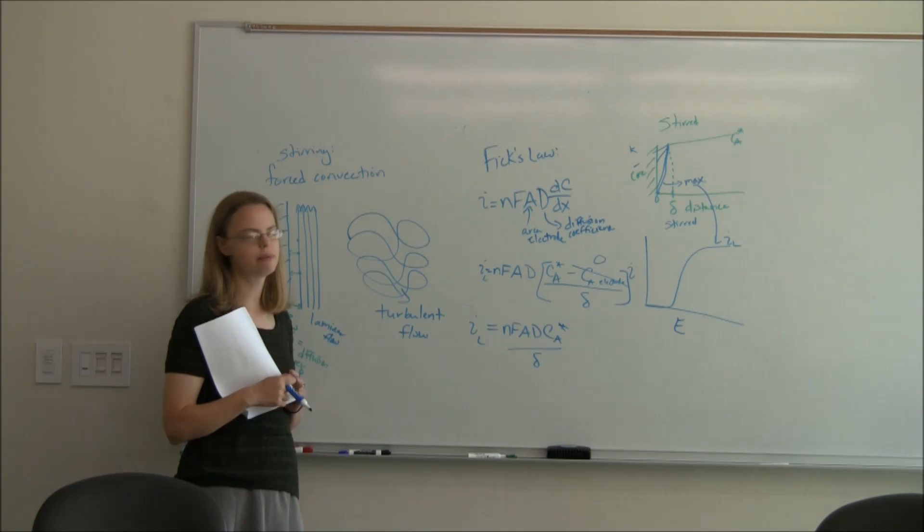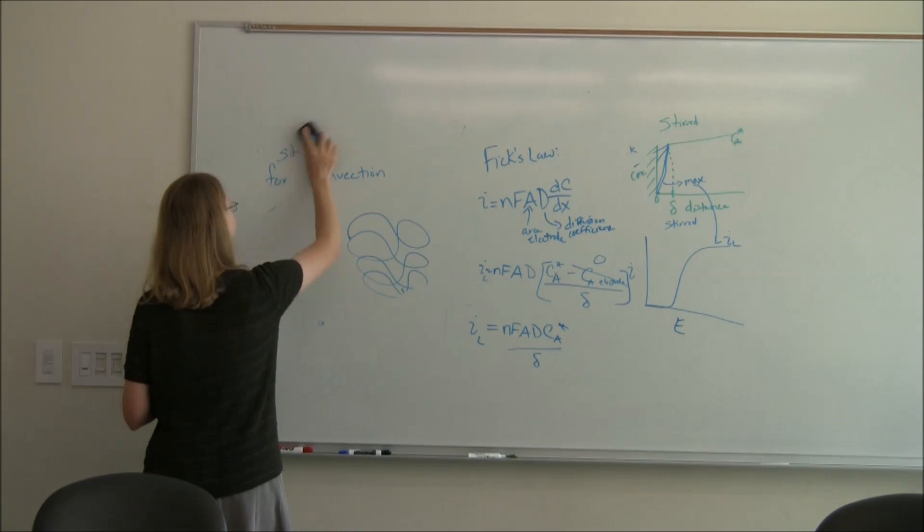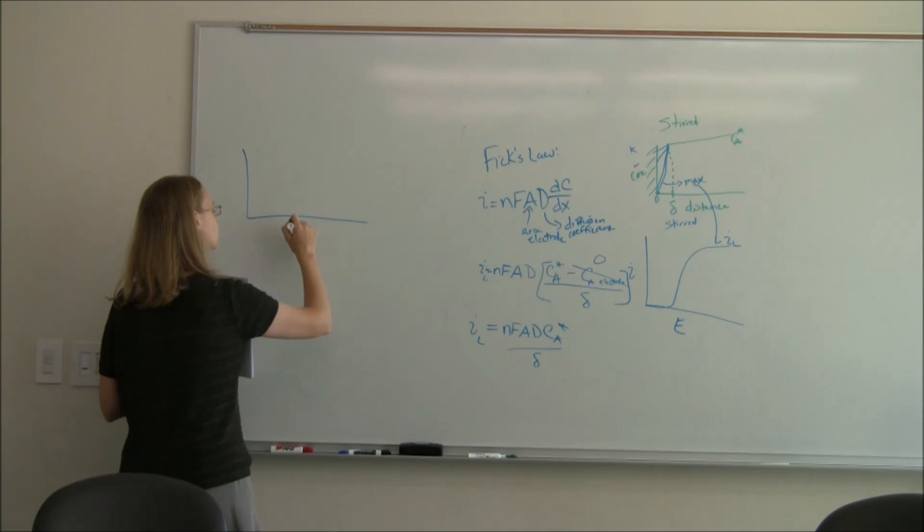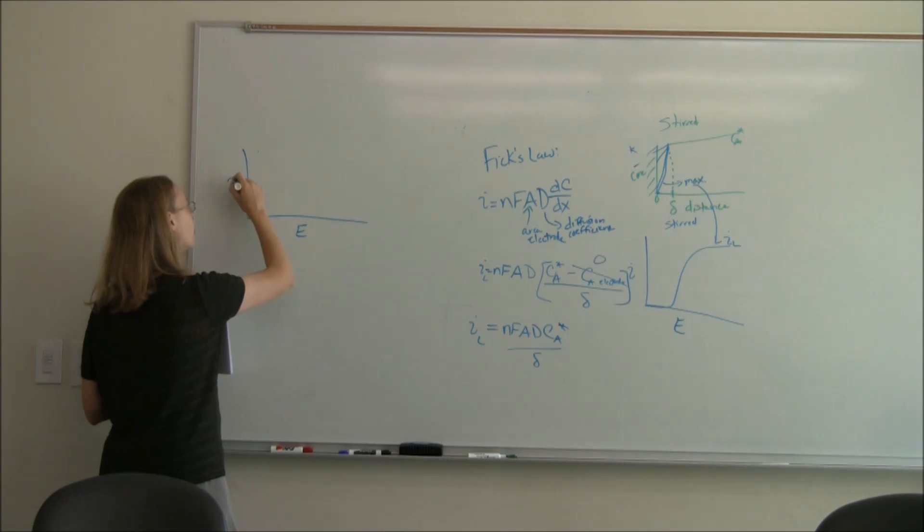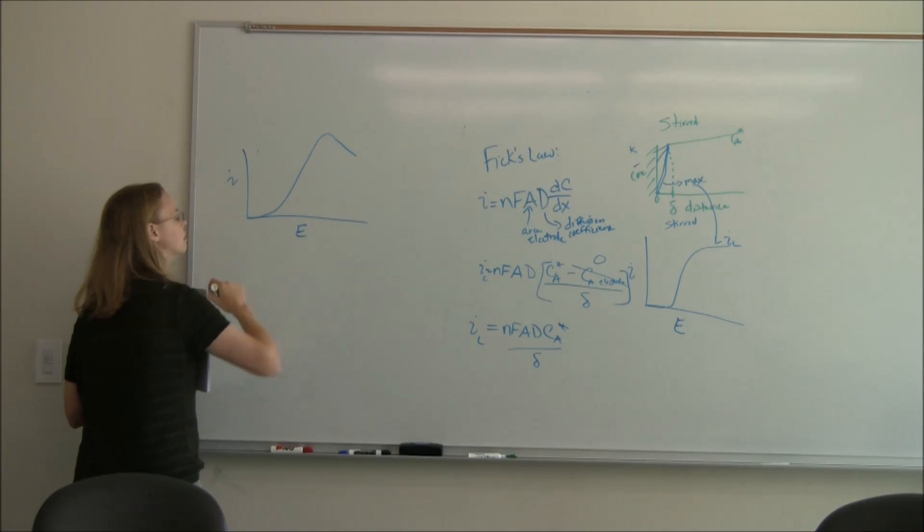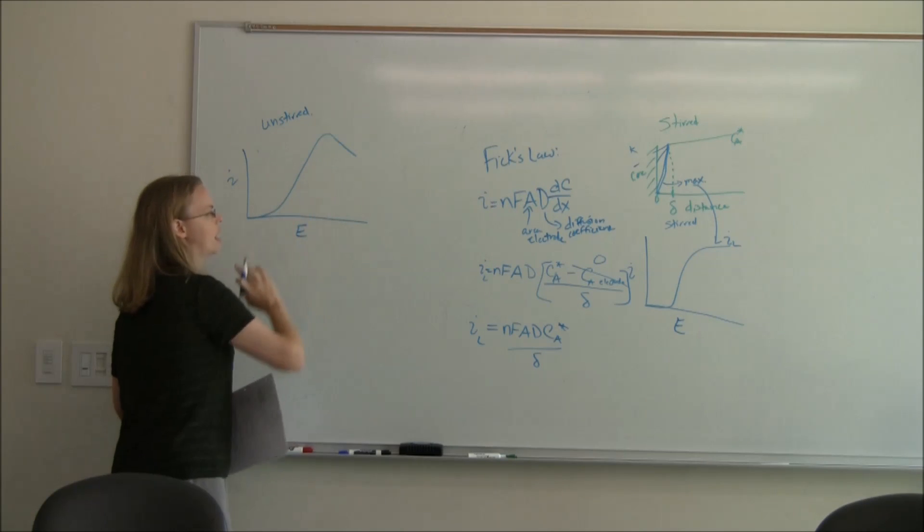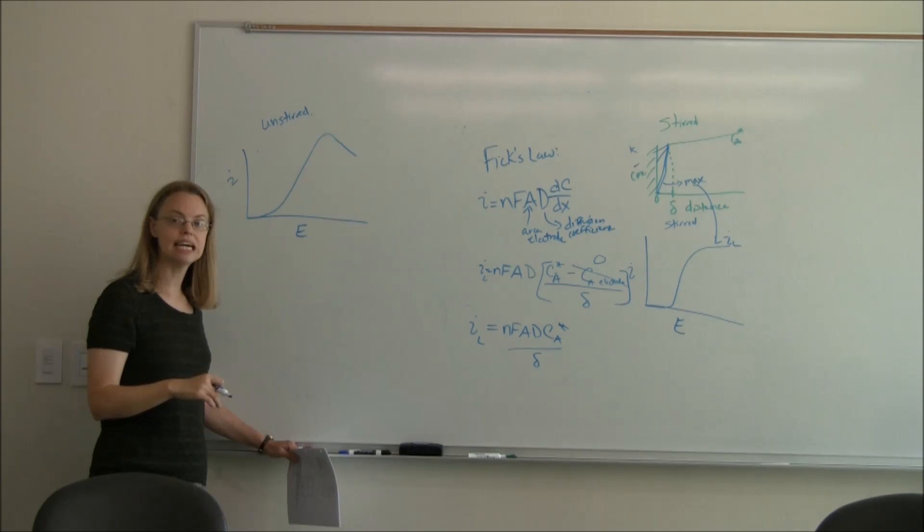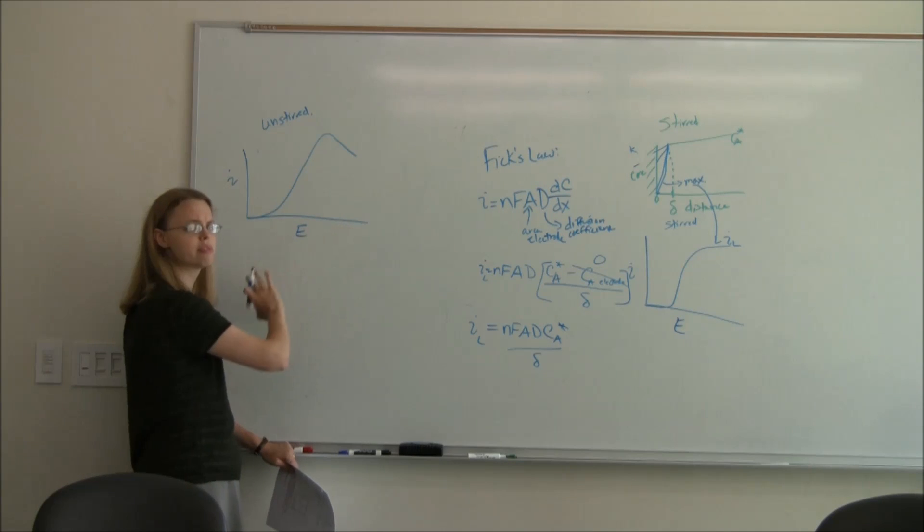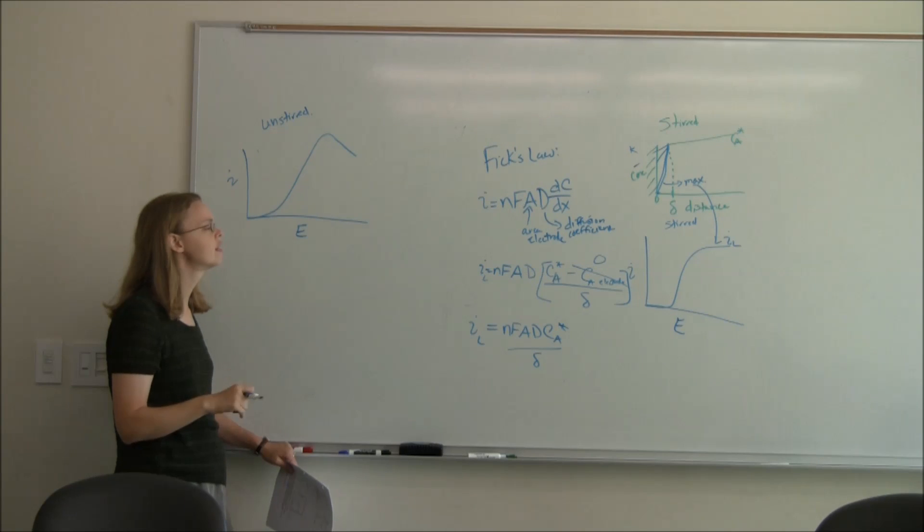But we're not going to stir in our experiment. And if you don't stir, what happens? If you don't stir, you get a curve that kind of looks like this. So you reach a maximum and you start to come back down. Why do you come back down? You come back down, again, because the amount of analyte decreases. You don't come back down because you don't have enough energy to do the reaction. You still have a potential that's totally sufficient to do the reaction. But it starts to come back down just because you've depleted, you used up all of the analyte that was at the surface.